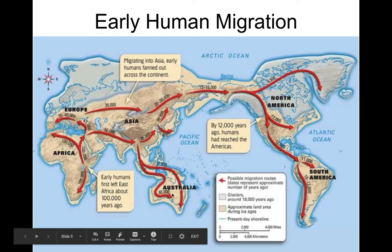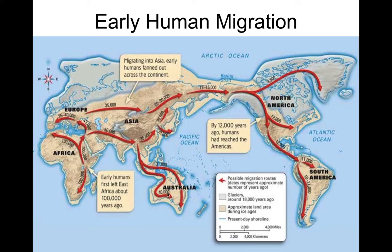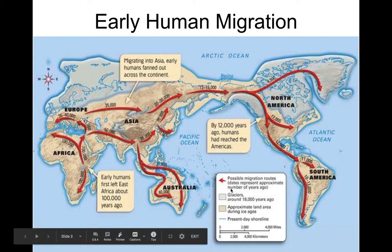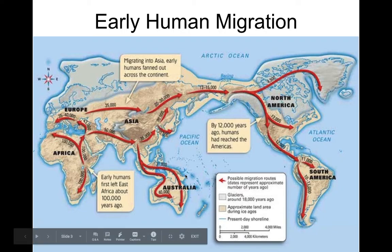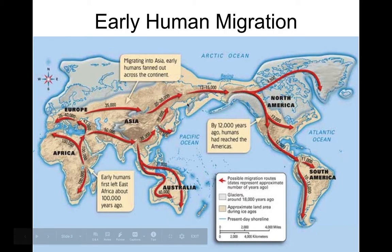There were land masses that would enable you to get down to Australia, so we got there about 40,000 years ago. The last place humans really got to was North America and South America, as well as some of the Pacific islands. The main thing to know is that we're out of Africa, we go to Europe and Asia, then from Asia we're able to go to Australia and eventually to North and South America via a land bridge.